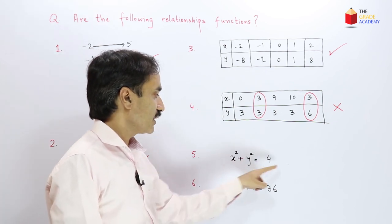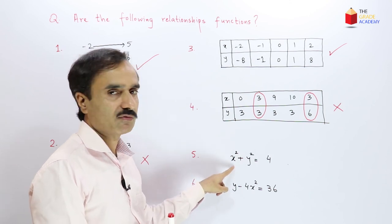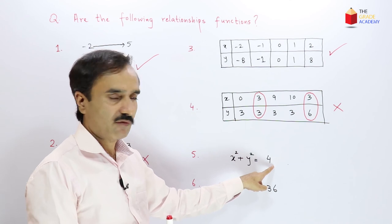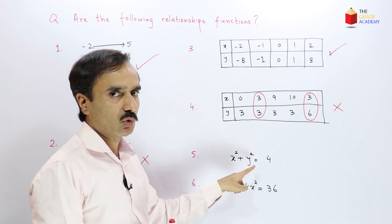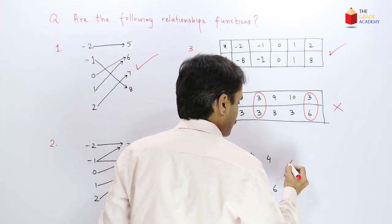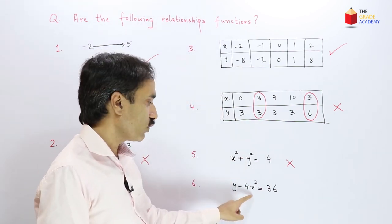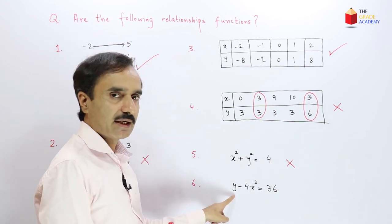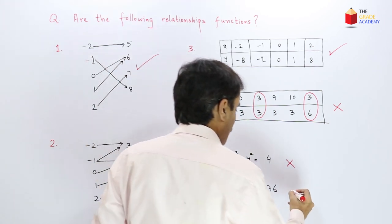For the fifth relationship, given as the equation x squared plus y squared equals 4: the dependent variable y has a power of 2, which is an even power, so this is not a function. And for the sixth relationship, y minus 4x squared equals 36: here the dependent variable y is raised to the first power, so this is a function.